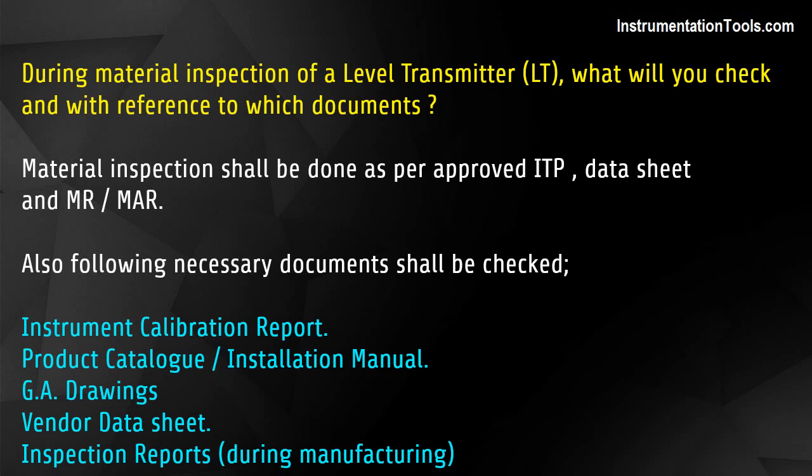During material inspection of a level transmitter (LT), what will you check, and with reference to which documents? Material inspection shall be done as per approved ITP, data sheet, and MR/MAR. The following necessary documents shall also be checked: instrument calibration report, product catalog and installation manual, GA drawings, vendor data sheet, and inspection reports during manufacturing.